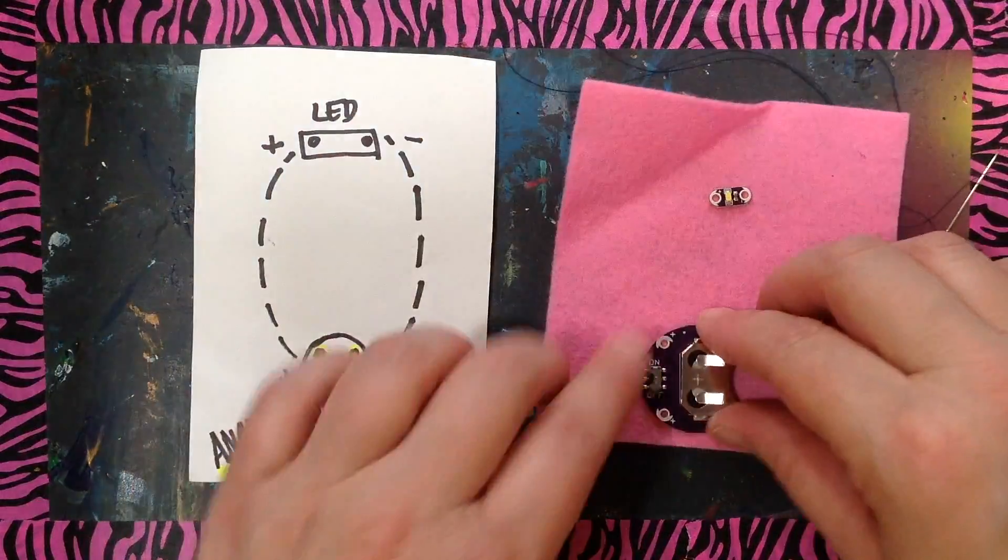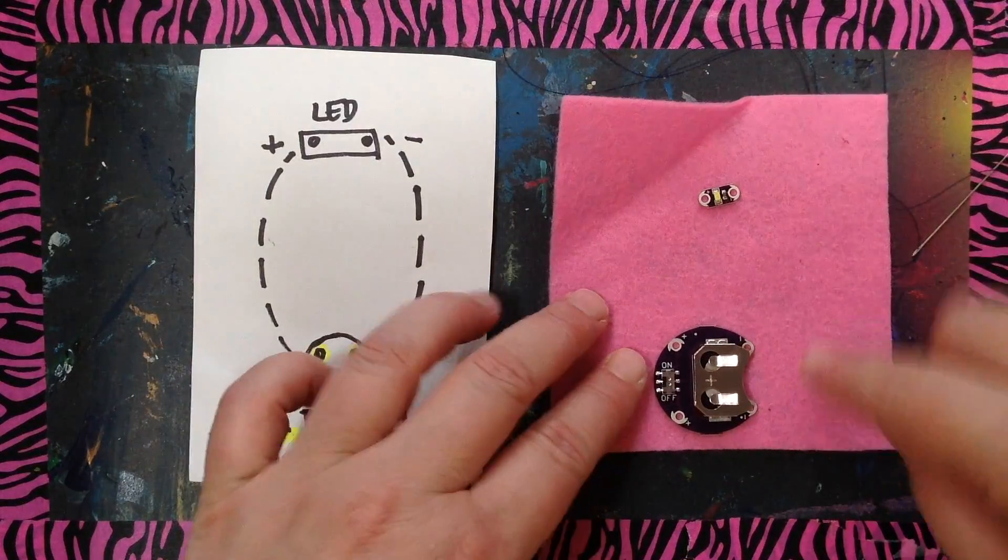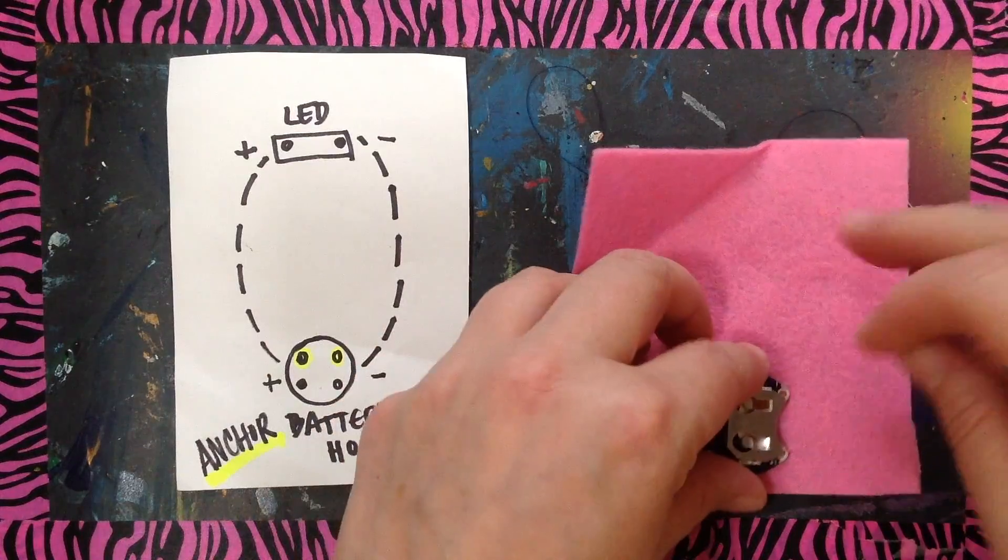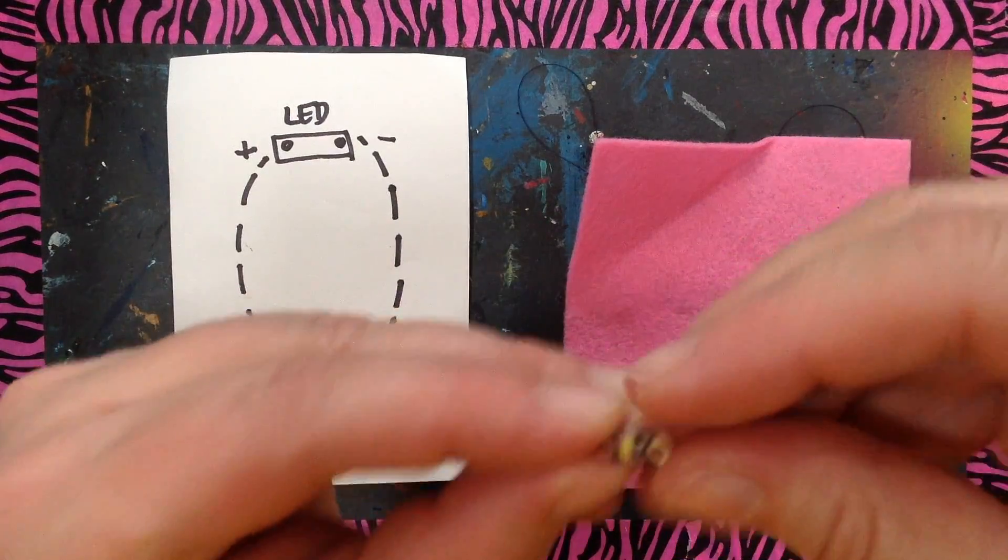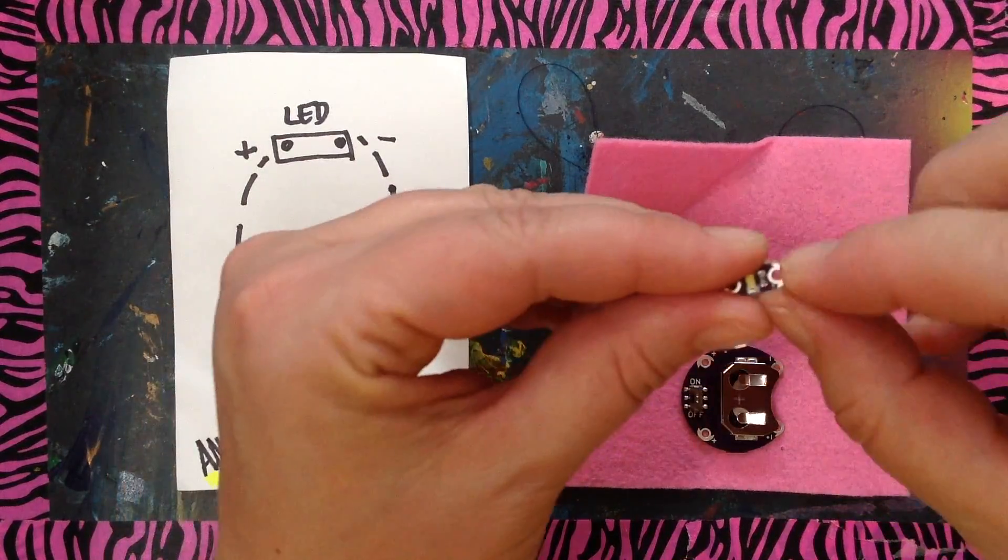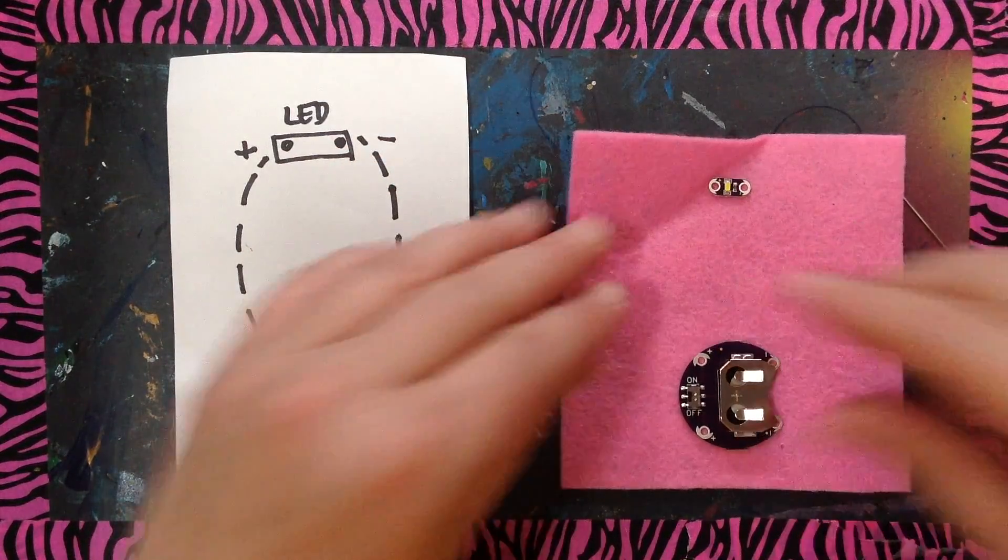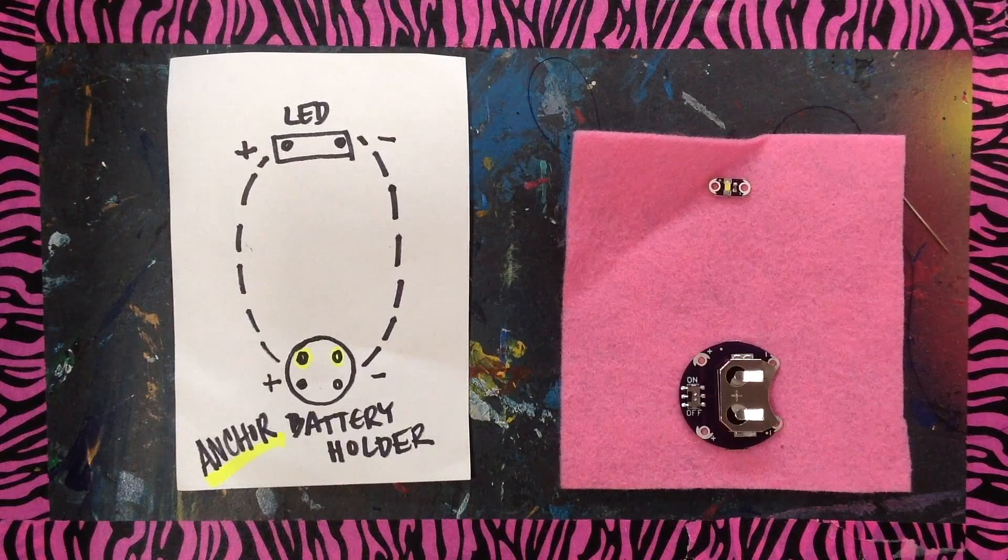So I've got positive here on this side, negative on this side. So looking at my little LED, I can see positive on this side, negative on this side. It's going to go about here. And I need to establish where my pathway is going to go.